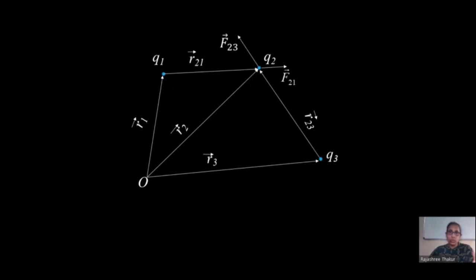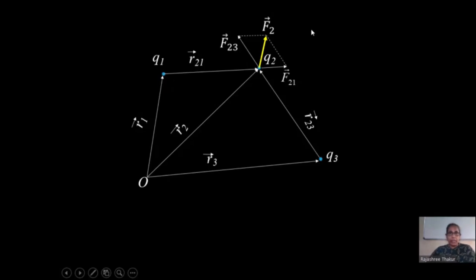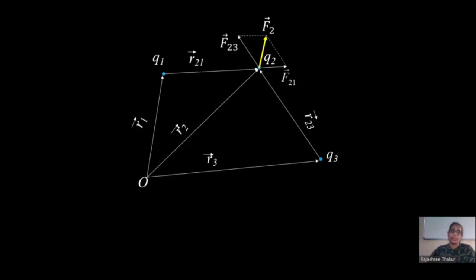Now that we have two forces F21 and F23, we find their resultant using the parallelogram law of vector addition. The diagonal of the parallelogram gives the resultant, named F2 — the total force on charge Q2 due to charges Q1 and Q3. Similarly, we keep doing this vector addition to find the resultant force on any one charge. That is all in this session. See you next time.